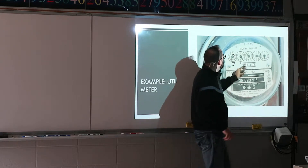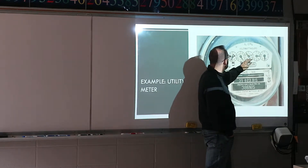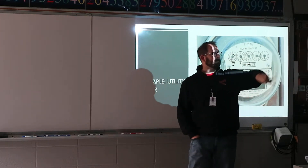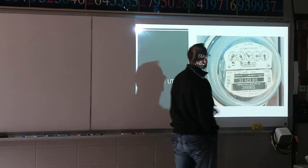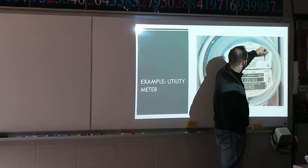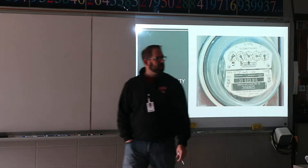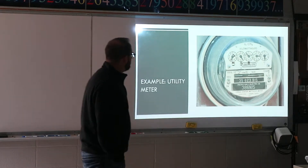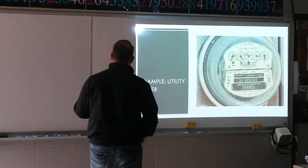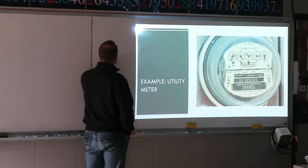Next meter when we read it. It's obviously spinning this direction, but what number have I already passed? Eight. You don't read the number it's going towards; you read the number it went past. Next one is spinning the other direction — seven. And the last one — four. You haven't quite made it to five yet. That's how you read that meter out. So I write down the number: five, five, eight, seven, four.